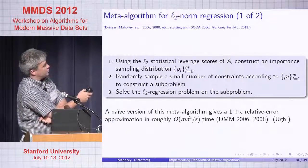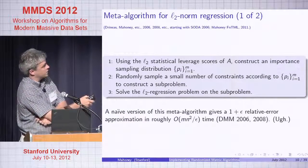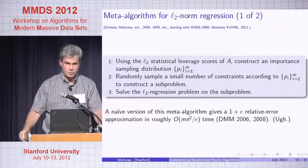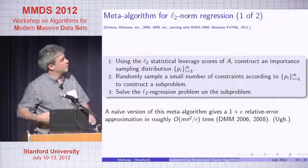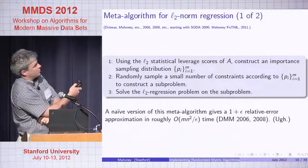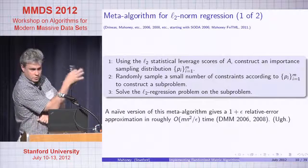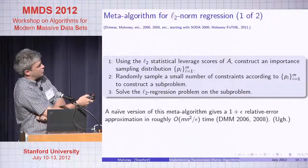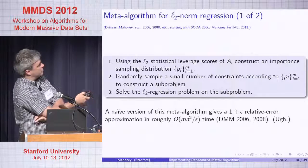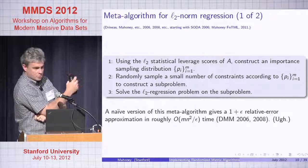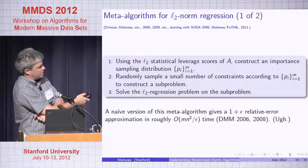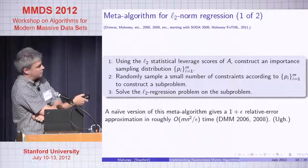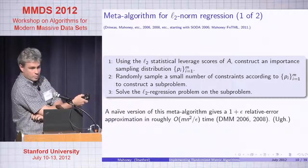Here's a meta-algorithm. Using the L2 statistical leverage scores as Petros described, construct an importance sampling distribution. You're tall; construct the relevant non-uniformity structure for spectral, Frobenius, or nuclear norm — all of these hold. Randomly sample a small number of constraints according to that importance distribution, then solve the sub-problem. Naively this gives you a coarse solution with running time O(mn²/ε), which takes as much time as solving the problem — if you want epsilon of 10^-10, that's a problem.